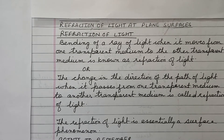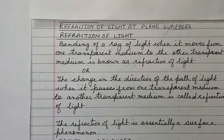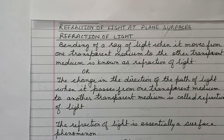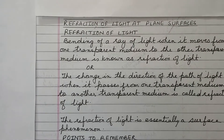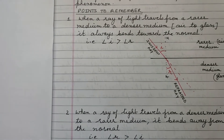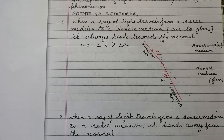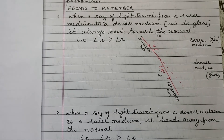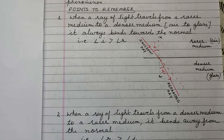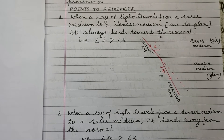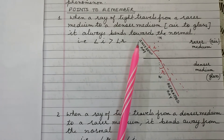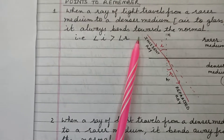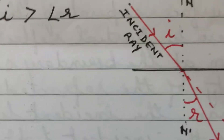To show the ray diagrams for refraction of light, we have to remember basically three points. The first point: when a ray of light travels from a rarer medium to a denser medium, it always bends towards the normal. If you have to draw the ray diagram, have a look — this is the air medium, which is a rarer medium, and this is the glass medium, which is a denser medium.